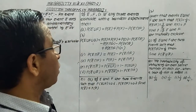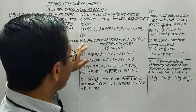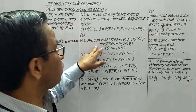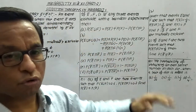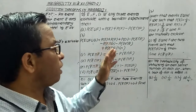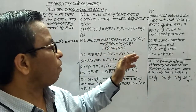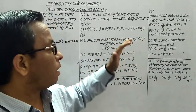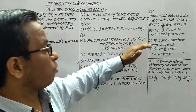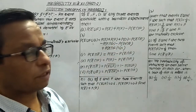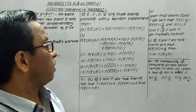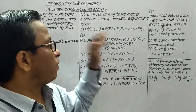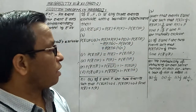Now, another theorem: the probability of E union F union G equals the probability of E plus the probability of F plus the probability of G minus the probability of E intersection F minus the probability of F intersection G, and so on.